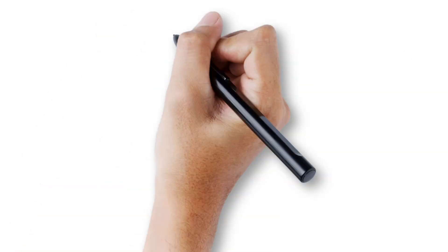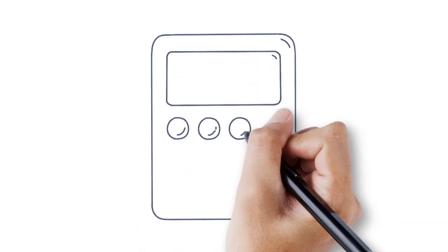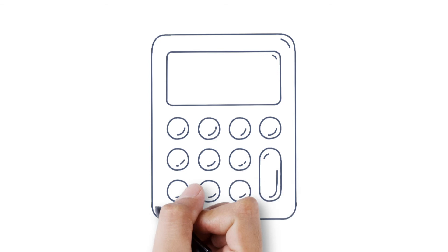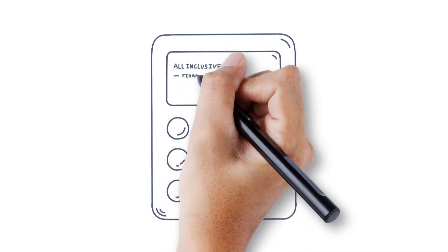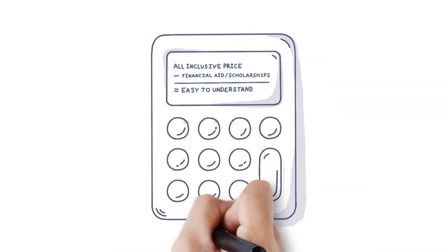For the one inclusive price model, financial aid, both federal and institutional once applied, reduces the cost of the sticker price. Each student's final, simplified bill looks different depending upon their aid eligibility.